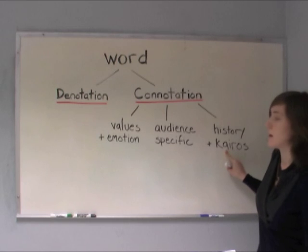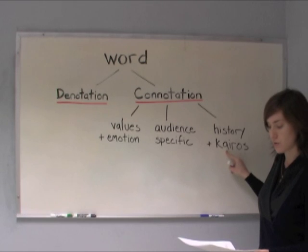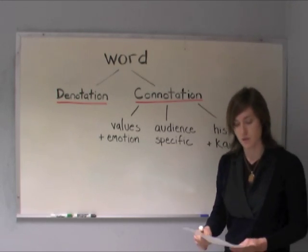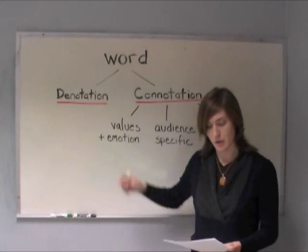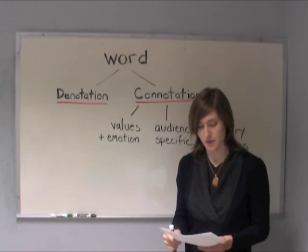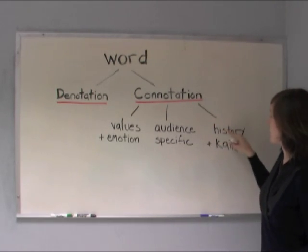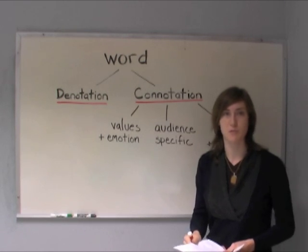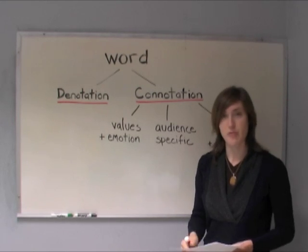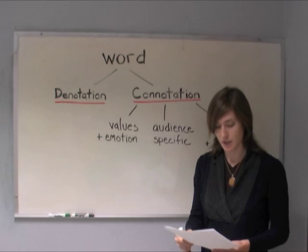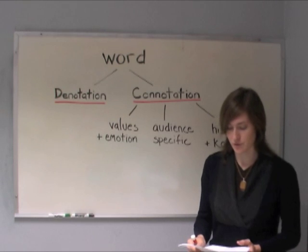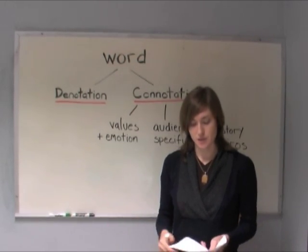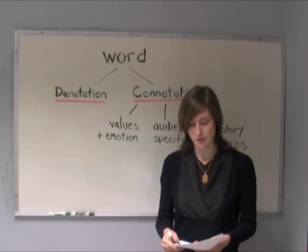The connotation also depends on the history of the word and on kairos. To take one more example from your work on the DREAM Act, let's think of the word 'immigrant.' The denotation is a person who comes to live permanently in another country. But the connotation of 'immigrant' includes that word's history — in this country, that includes all the different groups that have once been immigrants: English, Italian, Chinese, and Mexican immigrants. So while immigration can be a divisive issue that sets groups apart, the word 'immigrant' can actually bring people together because of its history.